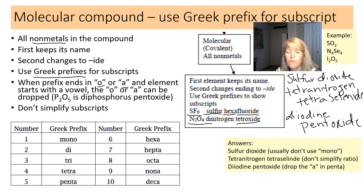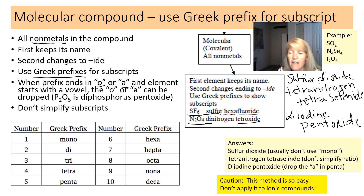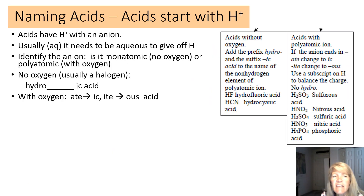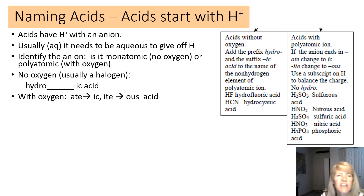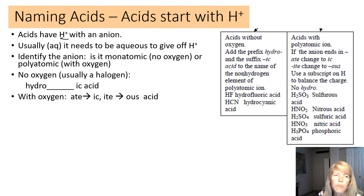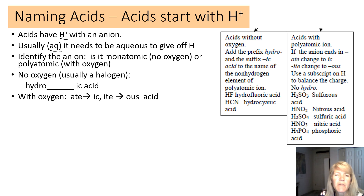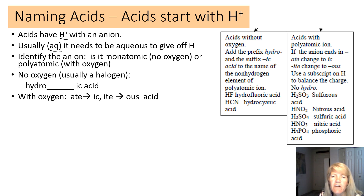These molecular naming rules are easy, but don't apply them to ionic compounds — they only work for molecular. The last category is acids. Acids start with H acting as a cation (H+) paired with some anion. You'll usually see 'aq' (aqueous) after acids, meaning dissolved in water — that's when they act as acids giving off H+.